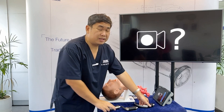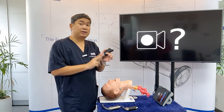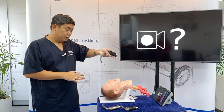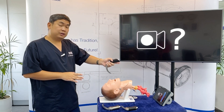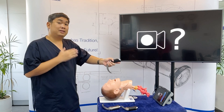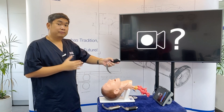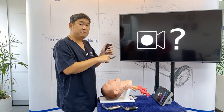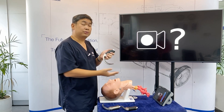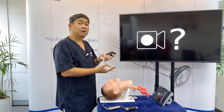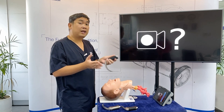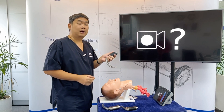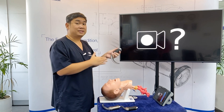If you are using a hyper-angulated blade, insert the blade in the midline. The design of the hyper-angulated blade mimics the curvature of the tongue, so you don't have to swipe the tongue to the side.